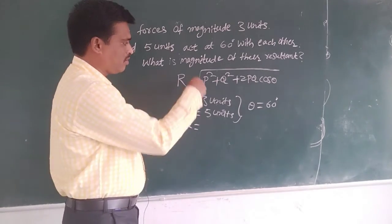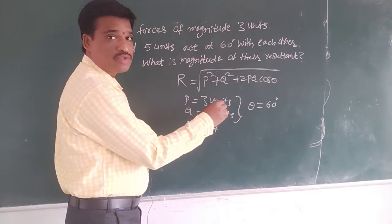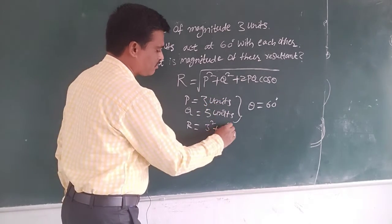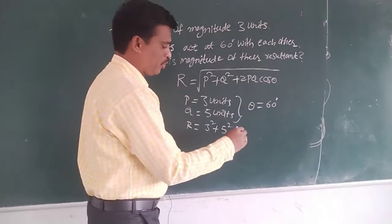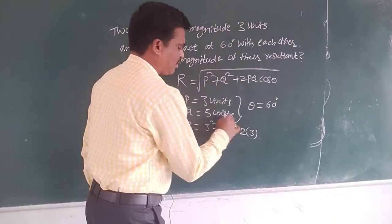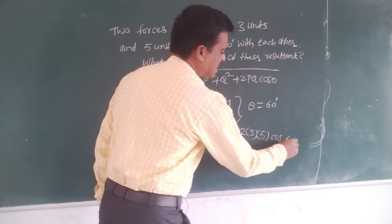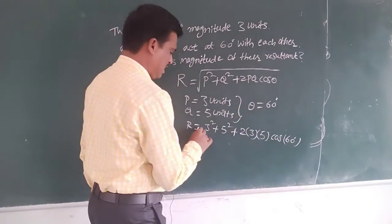So substitute these in this equation. Now see here, R equals what? R equals P squared, P is 3, so 3 squared, plus Q squared equals 5 squared, plus 2PQ, 2 times 3 times 5, cos 60 degrees.